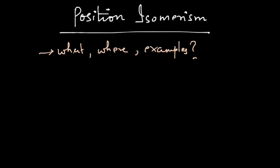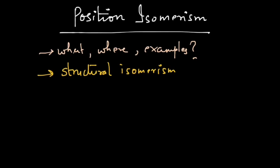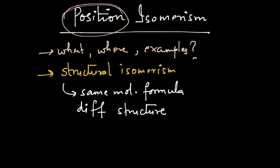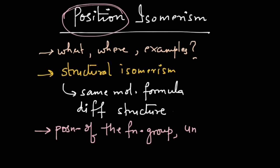Position isomerism is a kind of structural isomerism. For structural isomerism, two compounds are structural isomers when they have the same molecular formula but a difference in their structure. For position isomerism specifically, the difference in structure is due to the position of the functional group present in the compound, or the unsaturation — that is the double bond or triple bond — or the substituents. At least one of these should be different.